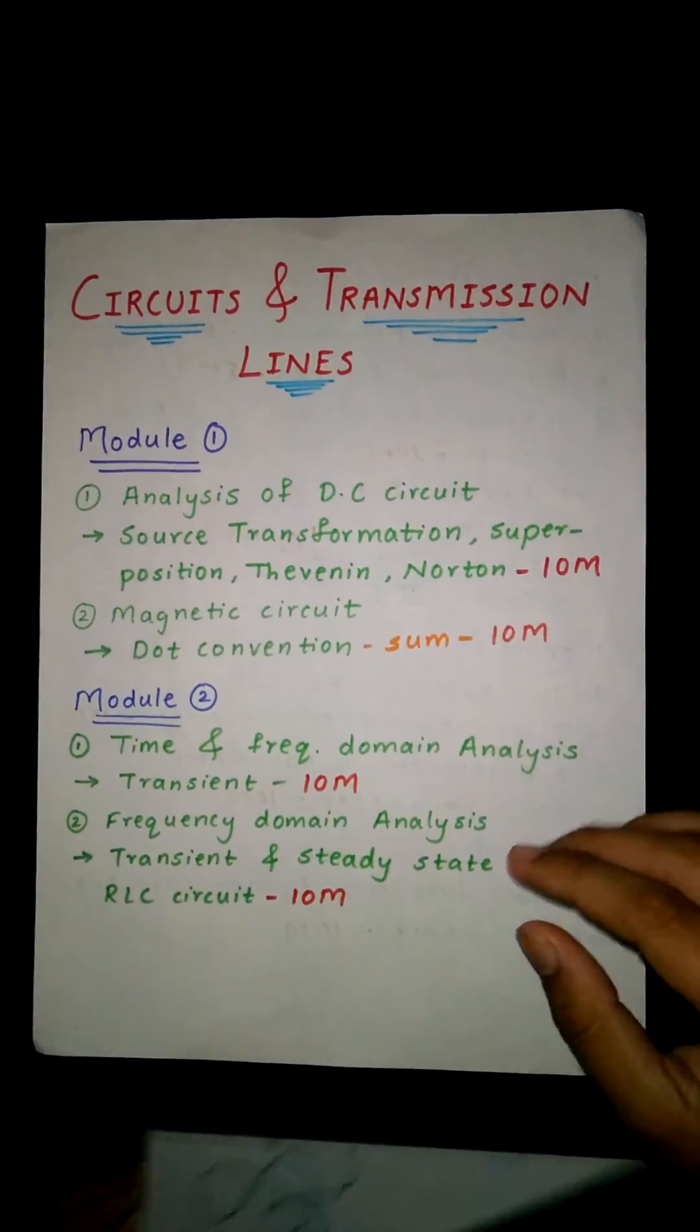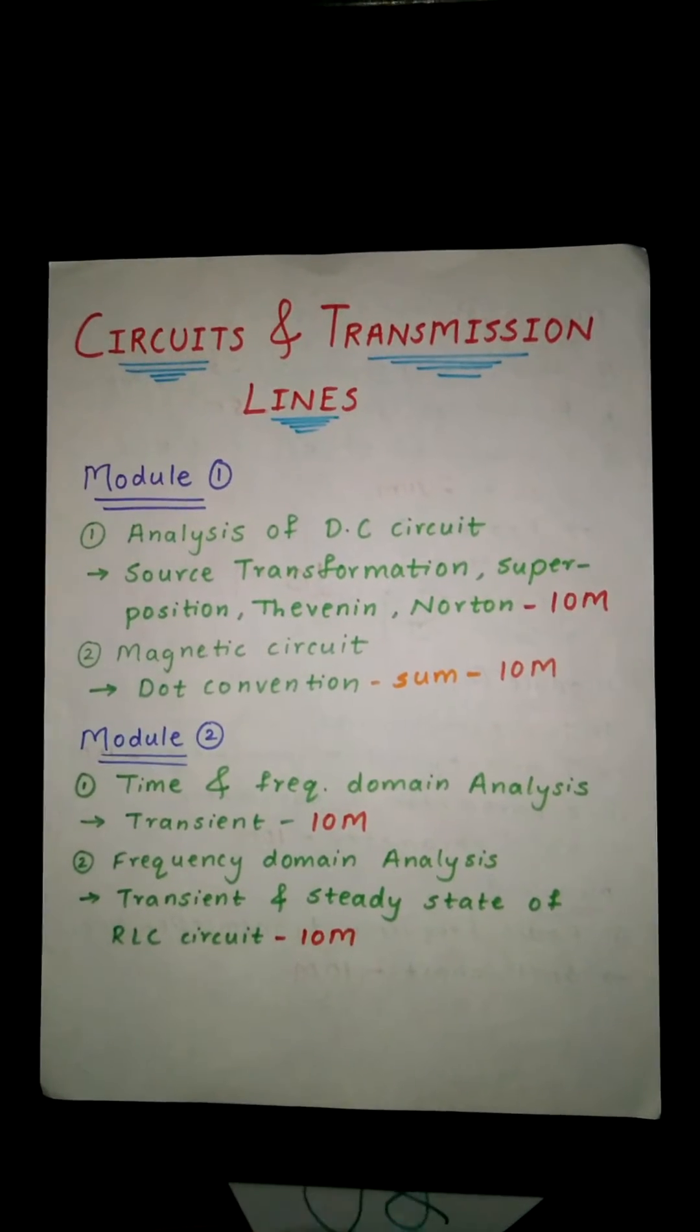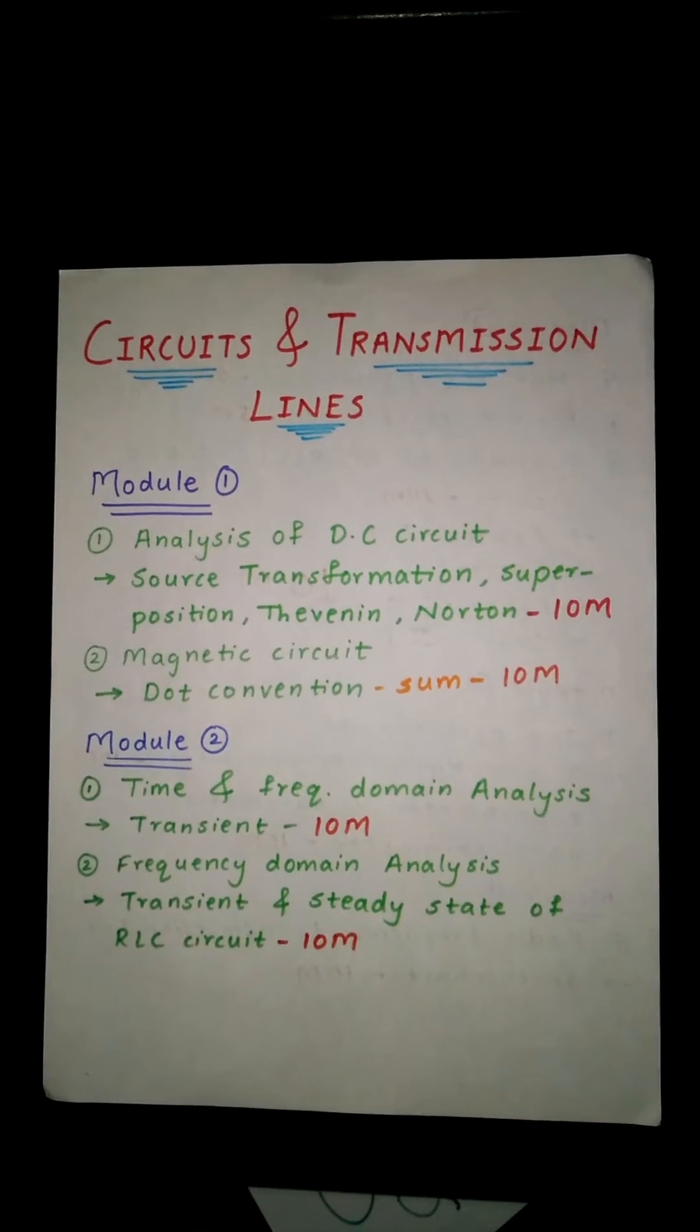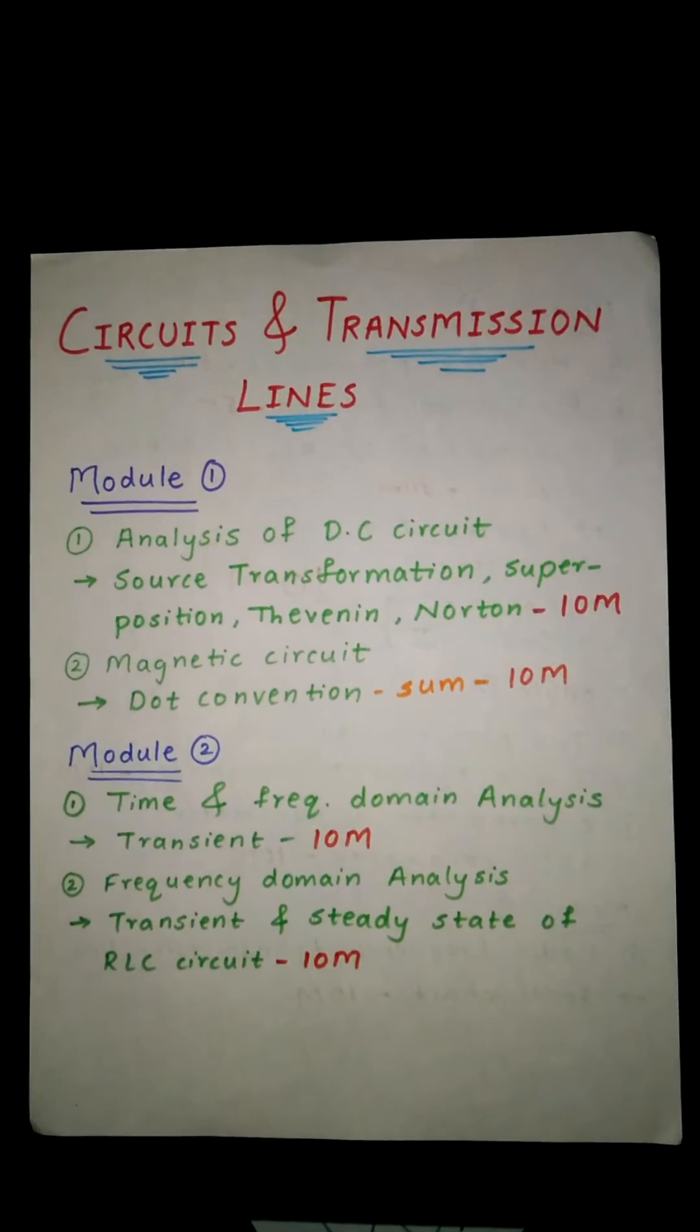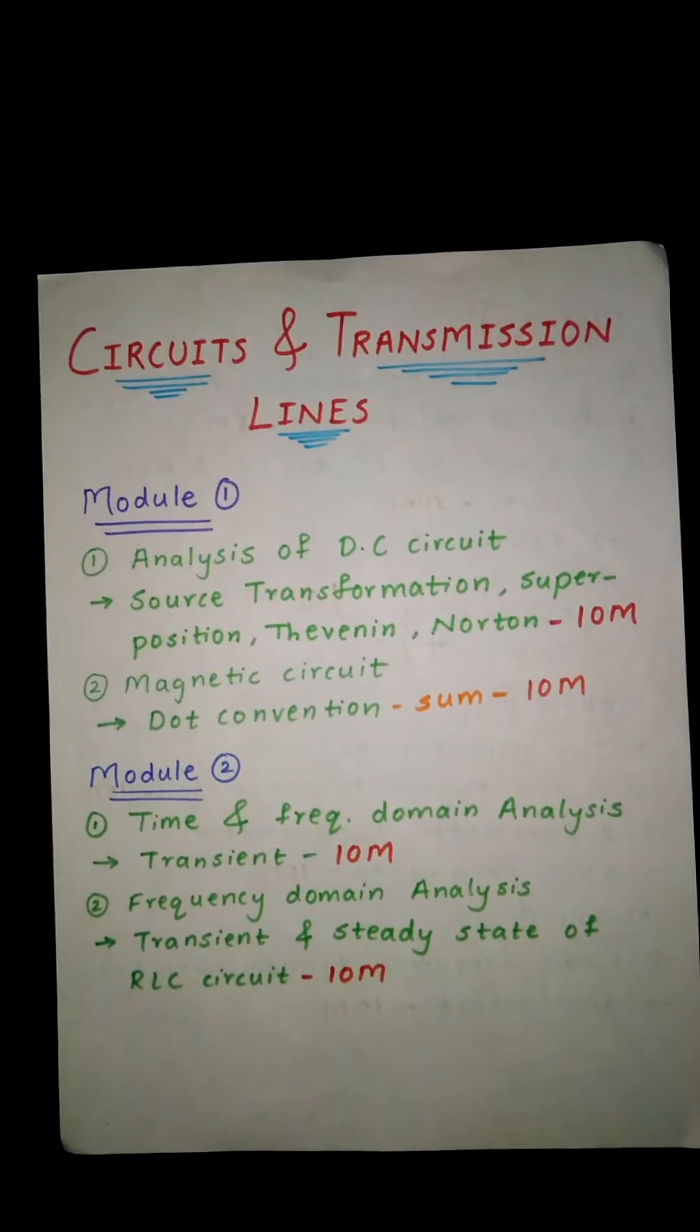We are going to see questions from Module 1, that is Analysis of DC Circuit. You will get questions from source transformation, superposition, Thevenin and Norton sums - these are all confirmed questions and you will get one question for 10 marks. Second is magnetic circuit, that is dot convention sum, which is also a confirmed sum for 10 marks.